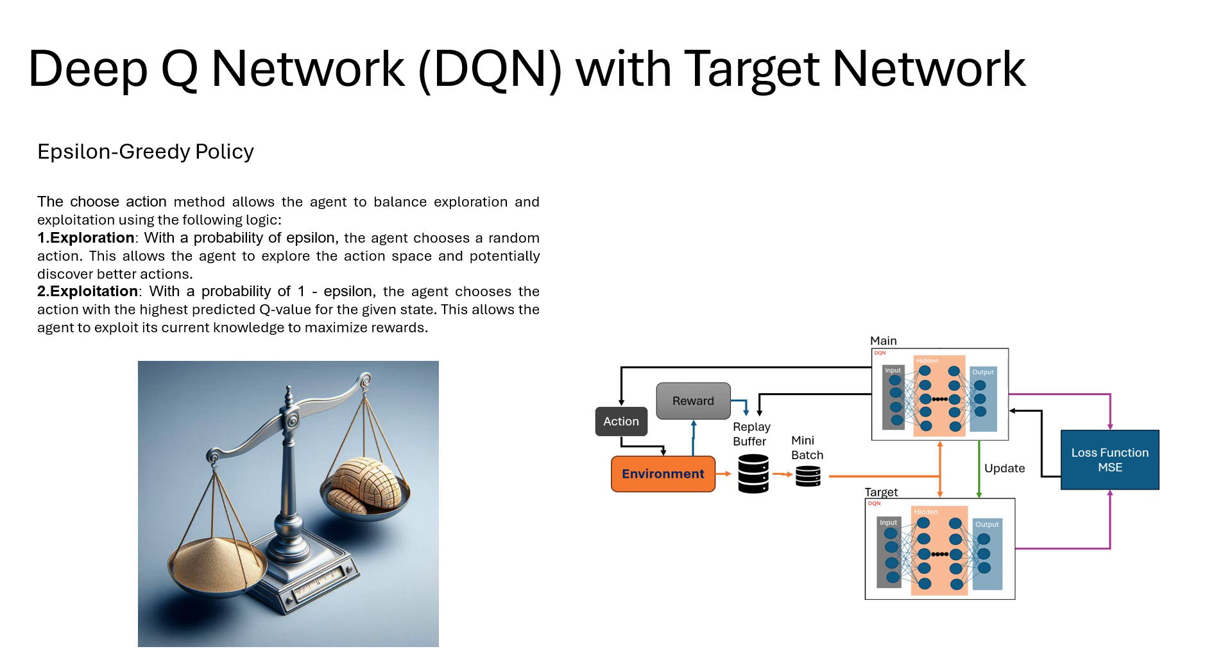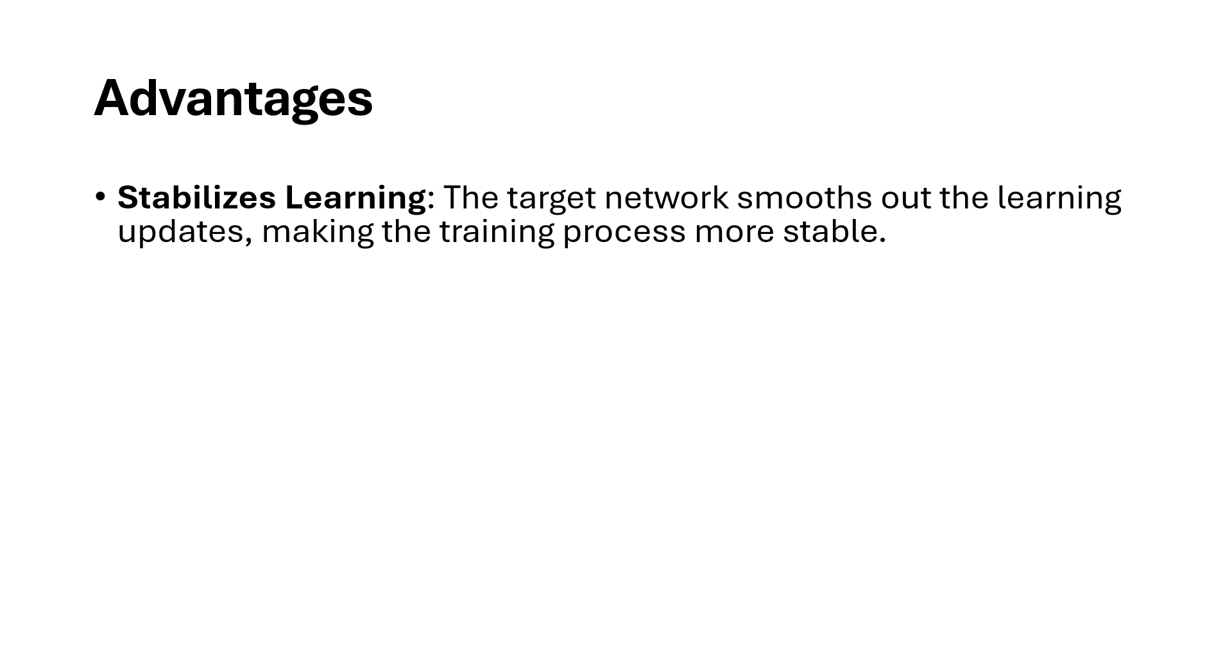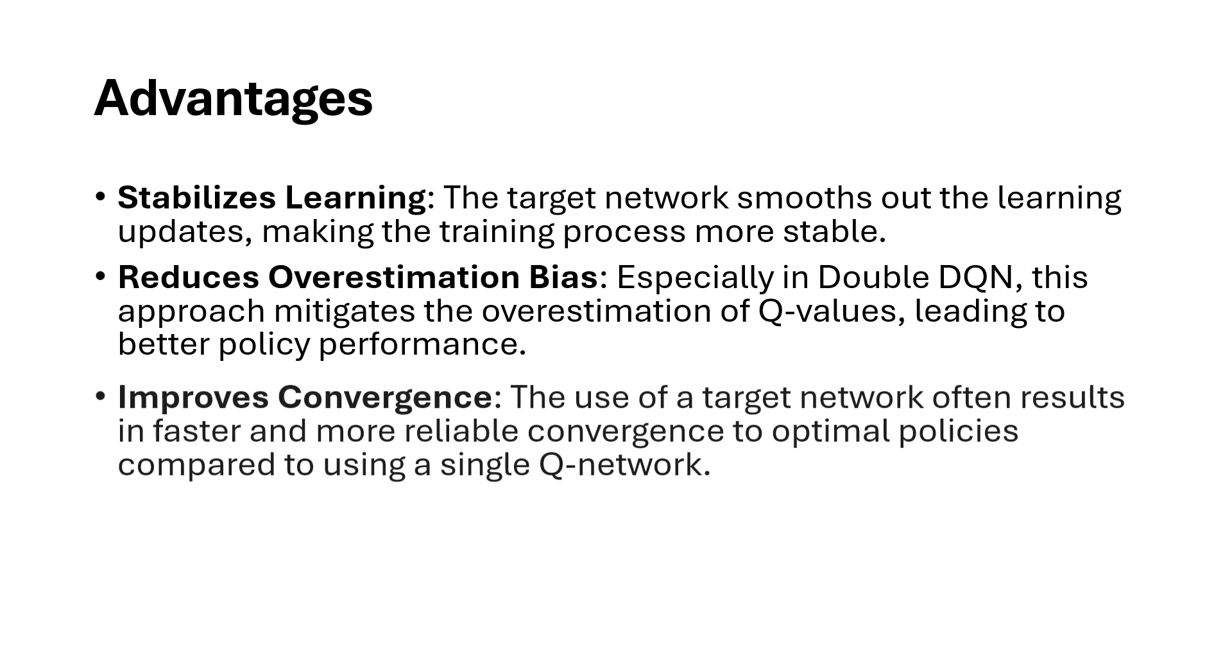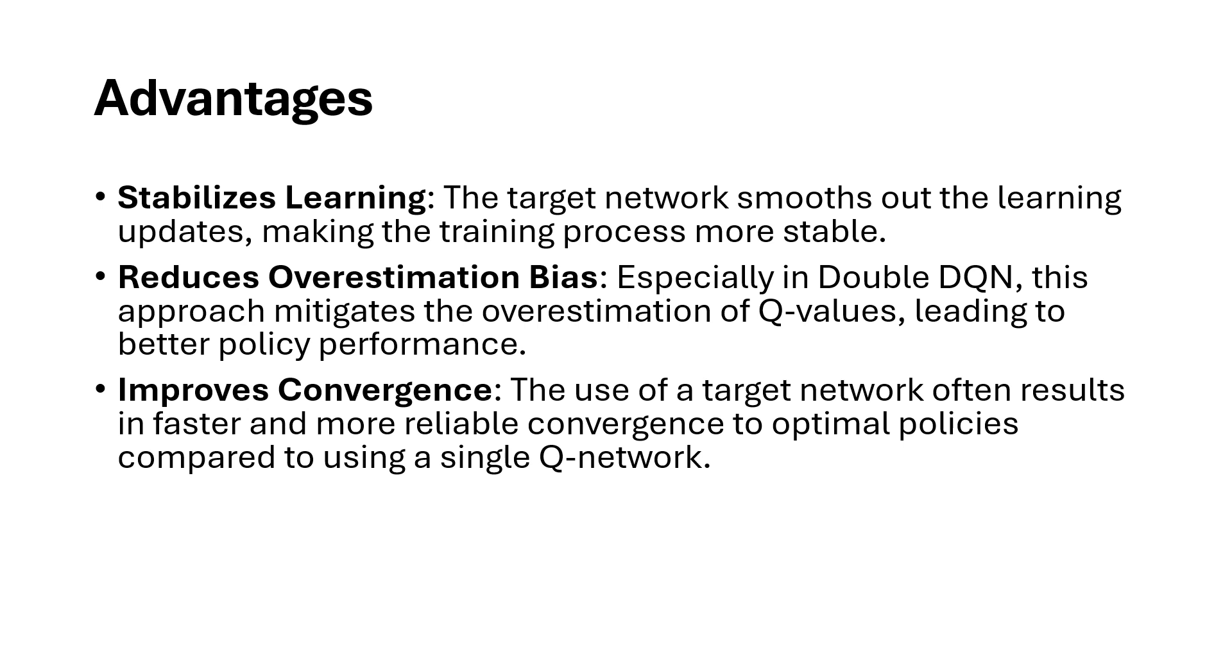So there are advantages. First, stabilizing learning: the target network smooths out the learning updates, making the training process more stable. Reduces overestimation bias, especially in Double DQN. This approach mitigates the overestimation of Q values, leading to better policy performance. Improves convergence: the use of a target network often results in faster and more reliable convergence to optimal policies compared to using a single Q network. This also leads to the actor-critic design that we could talk about later on in the next videos.